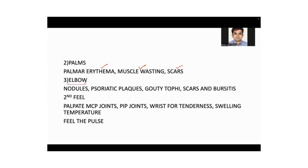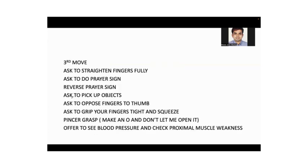Ask the patient to show the elbow — look for rheumatoid nodules, psoriatic plaques, gouty tophi, scars, or bursitis. Then feel: palpate the MCP joint gently, the PIP joint gently, check the wrist for tenderness, swelling, and temperature, and feel the pulse. Then move: ask the patient to straighten the fingers fully, do a prayer sign and reverse prayer sign, pick up an object such as a pen, oppose fingers to the thumb, grip your fingers and squeeze, and do a pencil grasp to assess strength.